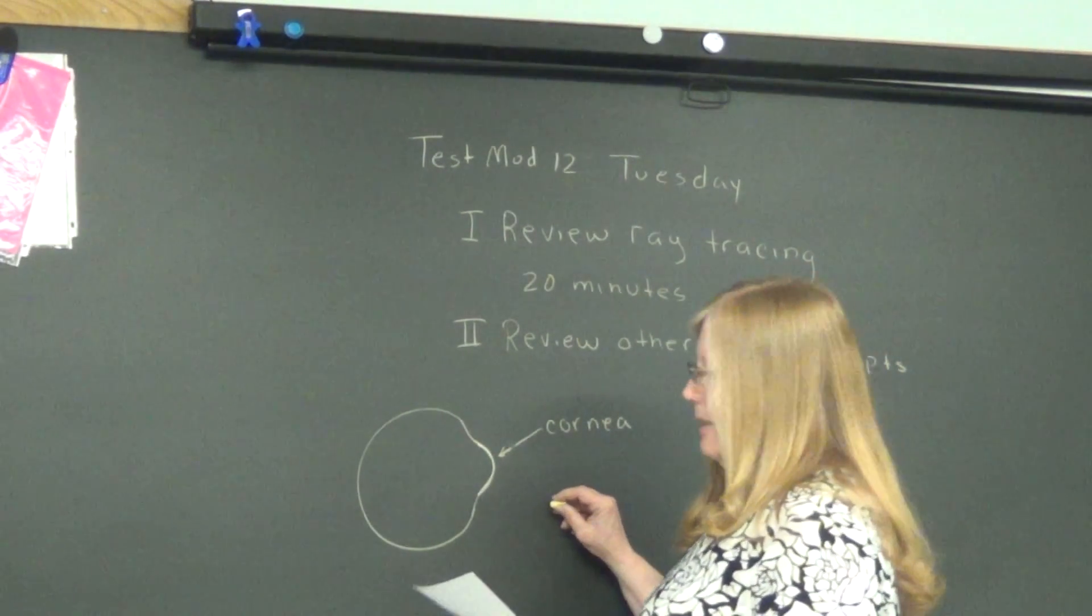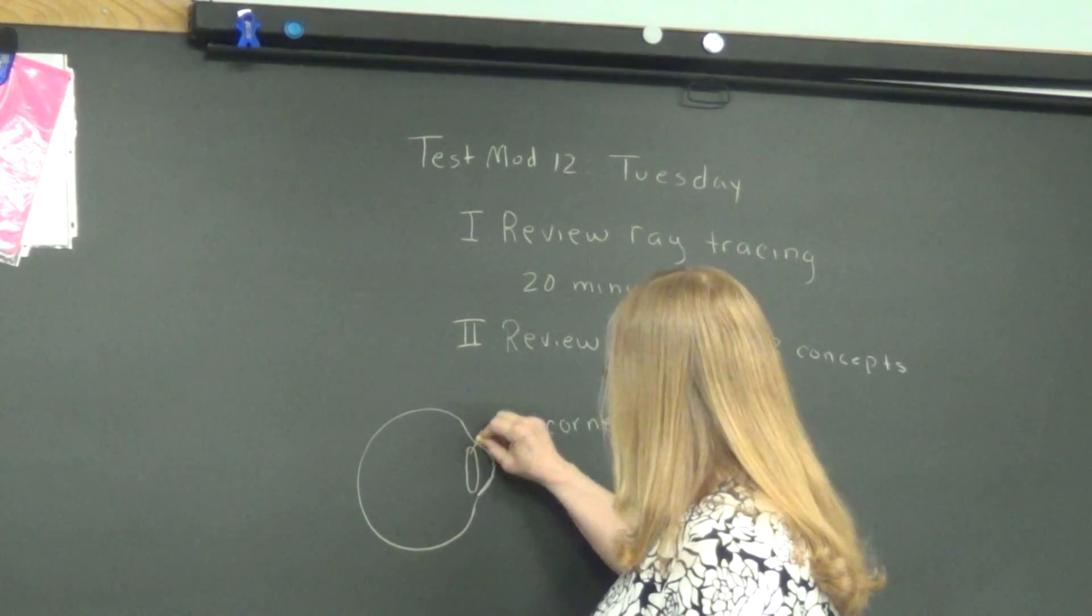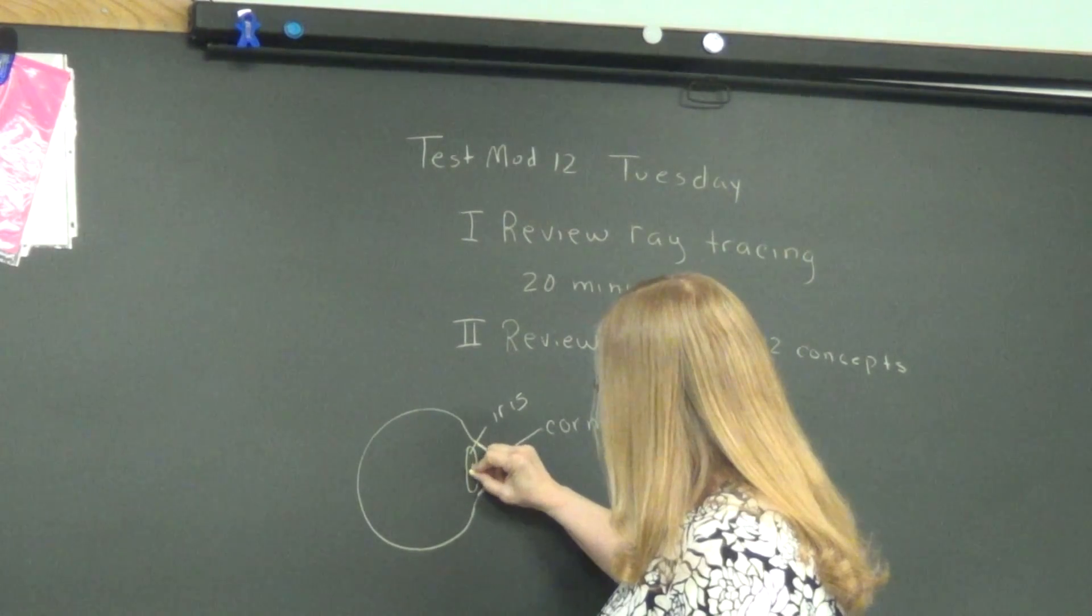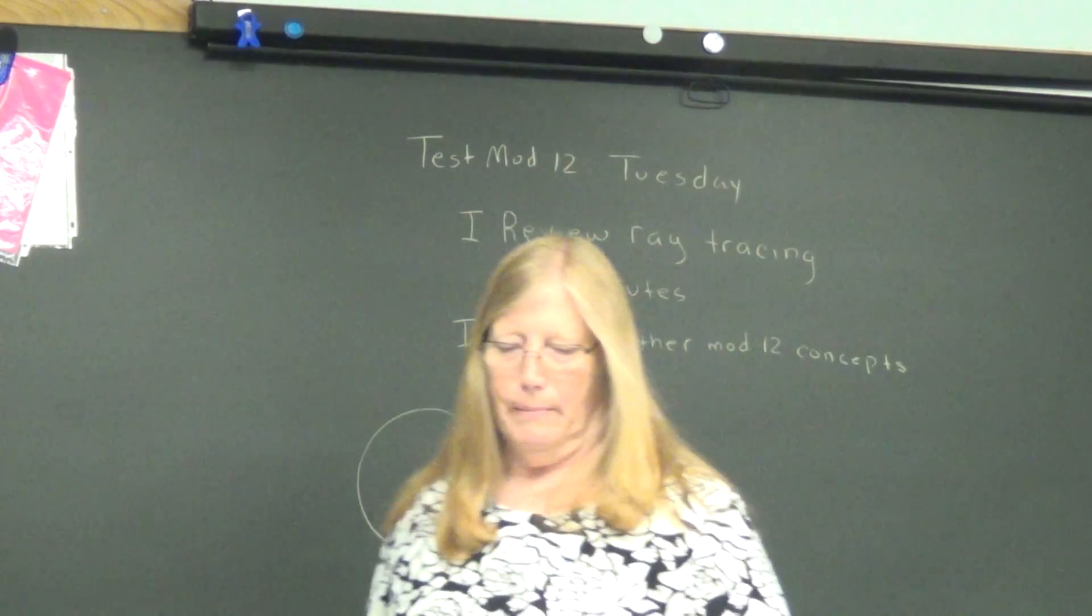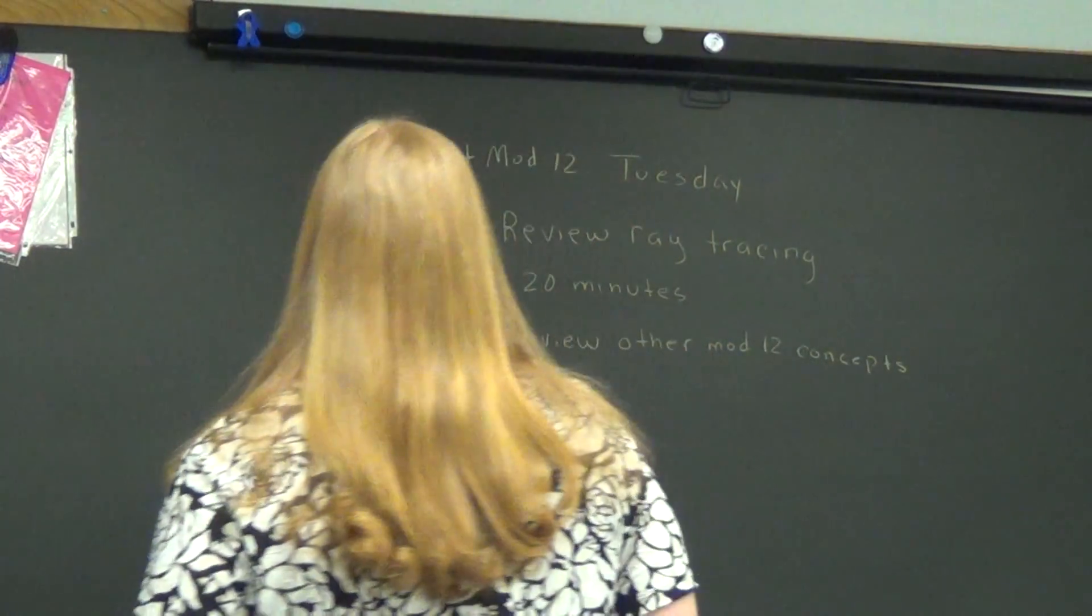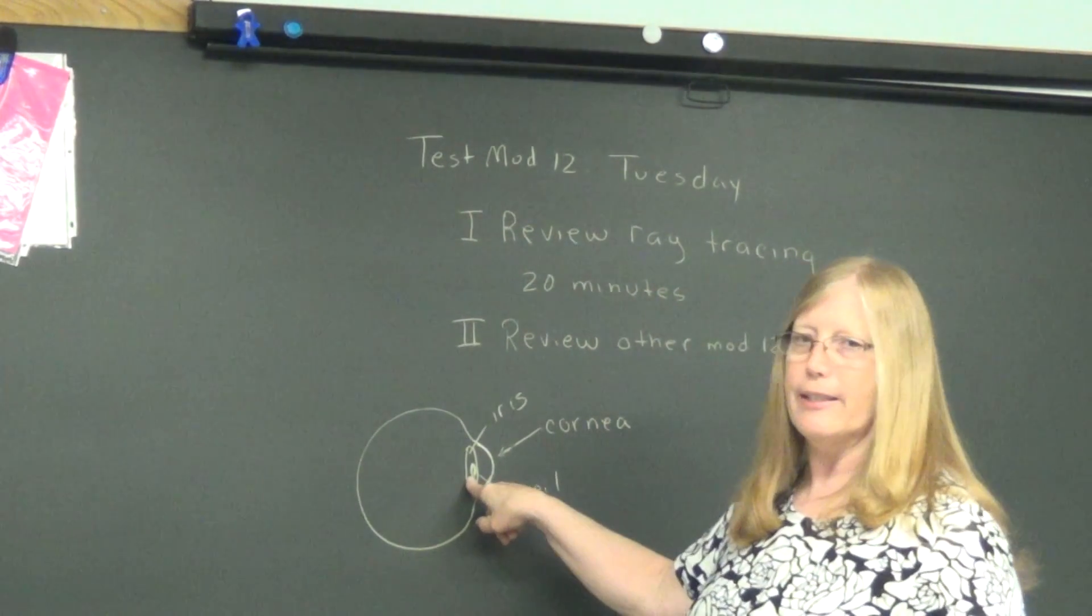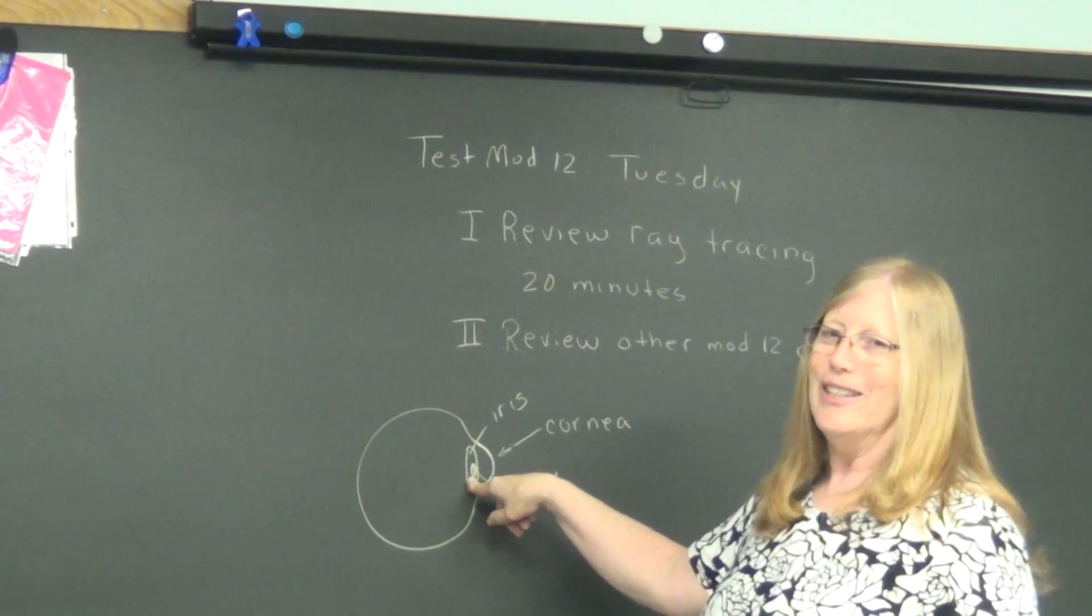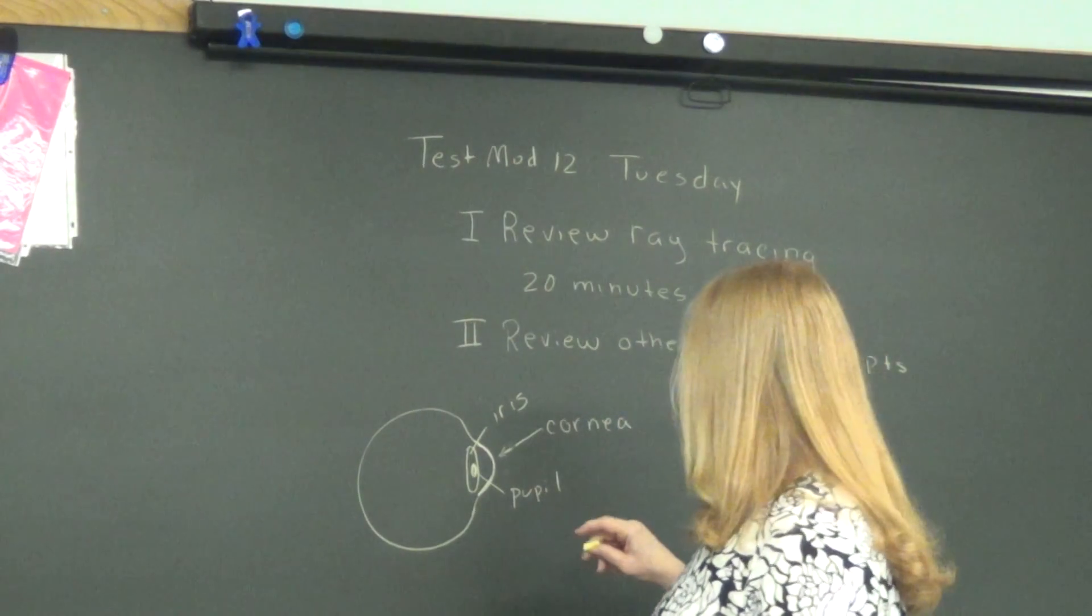And then what follows is the iris. That's the colored part. And in the middle of the iris is the hole, the opening of the pupil. And following the iris, this opens and closes depending on how much light there is. So right now, ours should be pretty small. When we turn off our overheads, it should enlarge to let more light in.